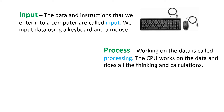Working on the data is called processing. Just like when a teacher tells you something, you hear it with your ears and think about it — it gets processed in your brain. Similarly, when we enter data into the computer, the brain of the computer starts working on that data. The brain of the computer is the CPU, and when it works on the data, that is called processing.